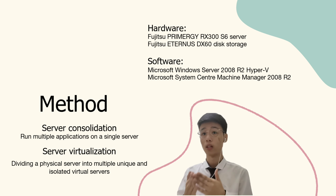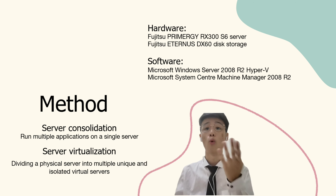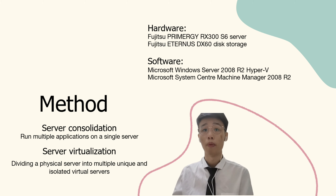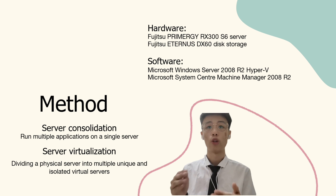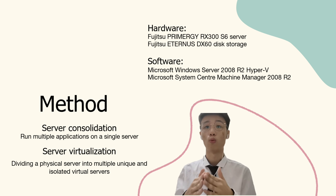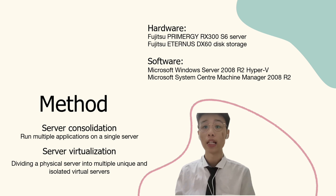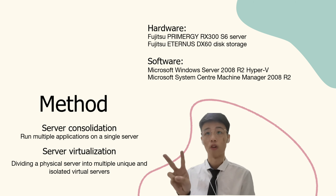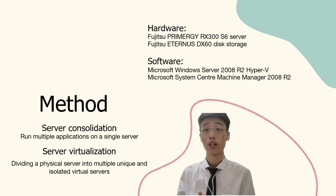After reducing the number of physical servers needed, we can solve many problems like overconsumption of energy and environment pollution. The second technology we implement is virtualization. Virtualization means dividing a physical server into multiple isolated virtual servers. By doing so, we can not only reduce the number of physical servers needed, but also improve system availability and operation stability. Basically, we implement two hardware and two software, which we will discuss more in the implementation and configuration part.